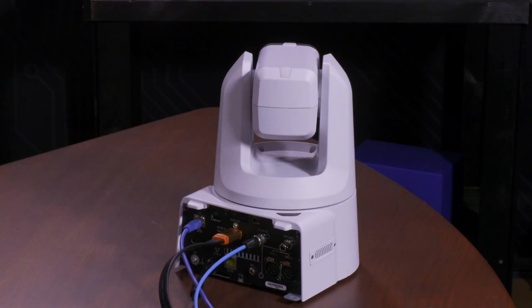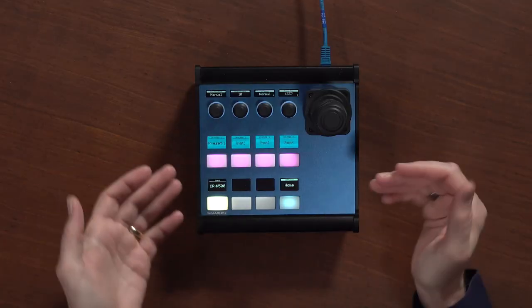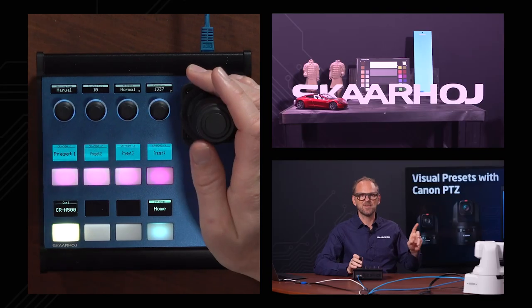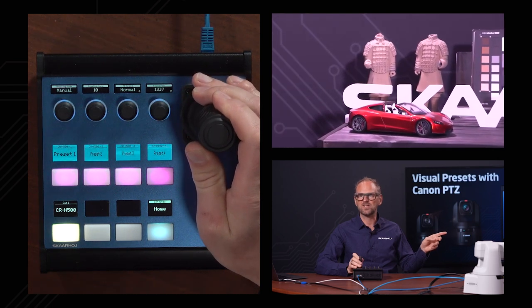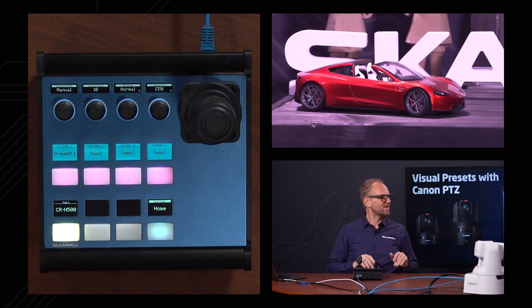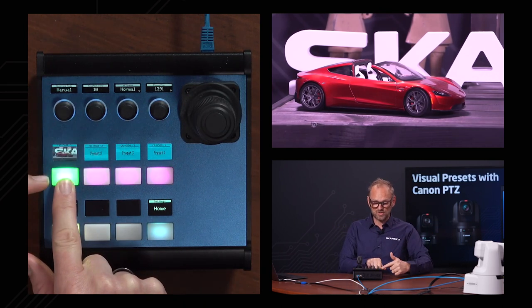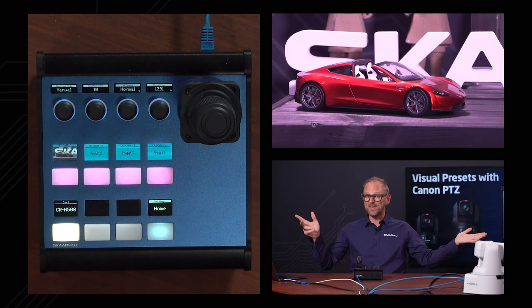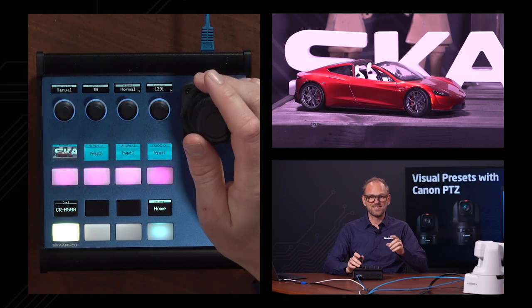We have the Canon CR-N500 camera here — awesome camera, we love it for so many reasons. One of them is that we can pull out an image from the camera and into the controller. I'm going to use the joystick on the MK2 to zoom in on the sports car right here. Now I have the camera in position, I press and hold, it turns green, and it records the thumbnail and shows in the display.